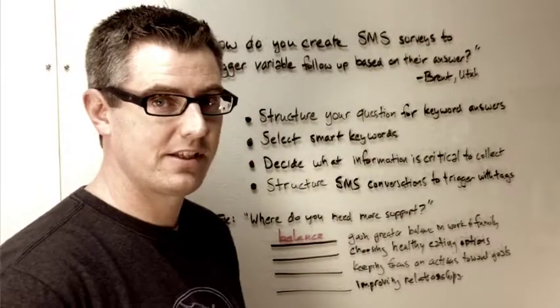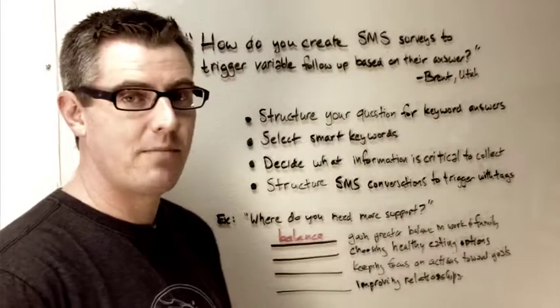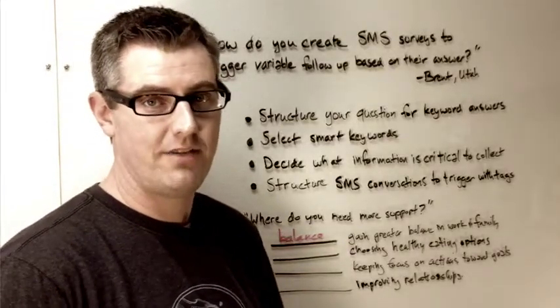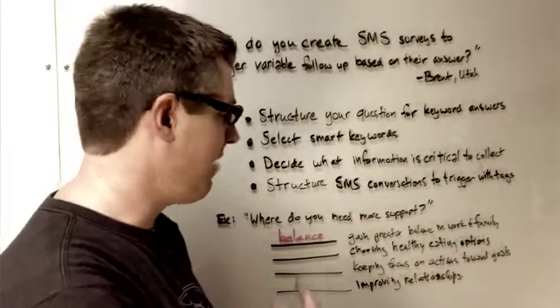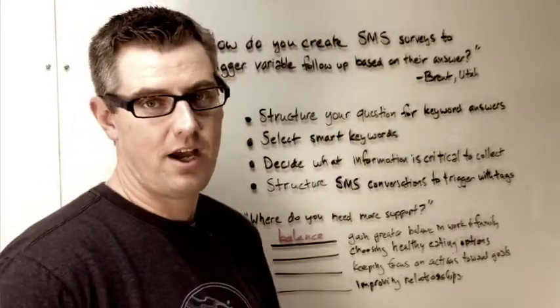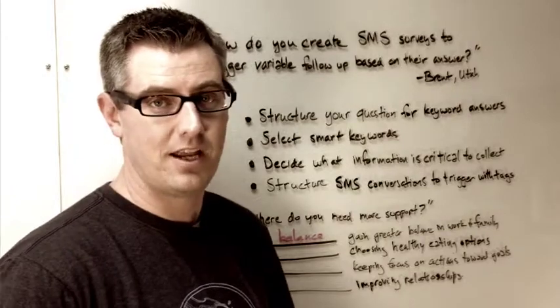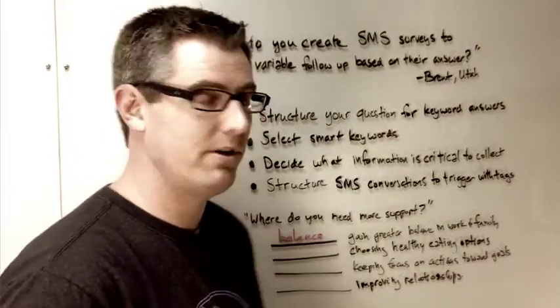Now, a helpful tip in this scenario is go ahead and type that word into your own smartphone, or if you have an old dumb phone, then try the dumb phone, and see how easy it is for you to type in the keyword, and see if autocorrect tries to change it to something else. That will be an indication if your keyword is actually a good keyword to use.